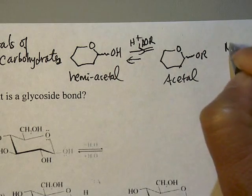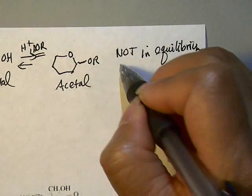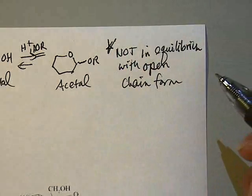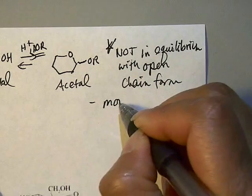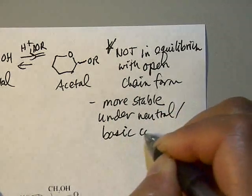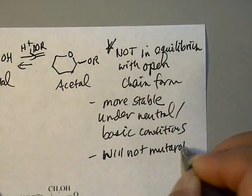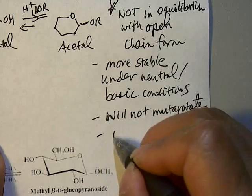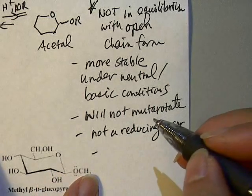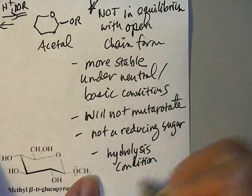Glycosides are not in equilibrium with the open-chain form — this is very important. They are more stable than hemiacetals, especially under neutral or basic conditions. Because glycosides are acetals rather than hemiacetals, they will not mutarotate and they are not reducing sugars. The only time a glycoside is susceptible to opening up is under hydrolysis conditions — that is, acid and water — at which point it will revert back to the hemiacetal.